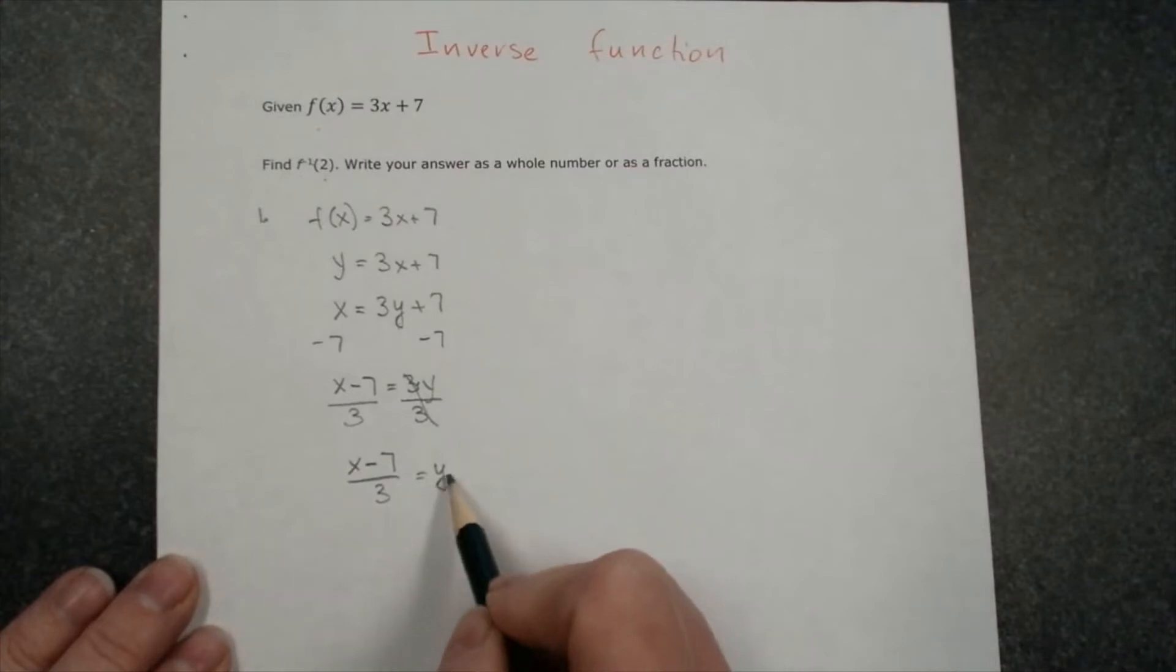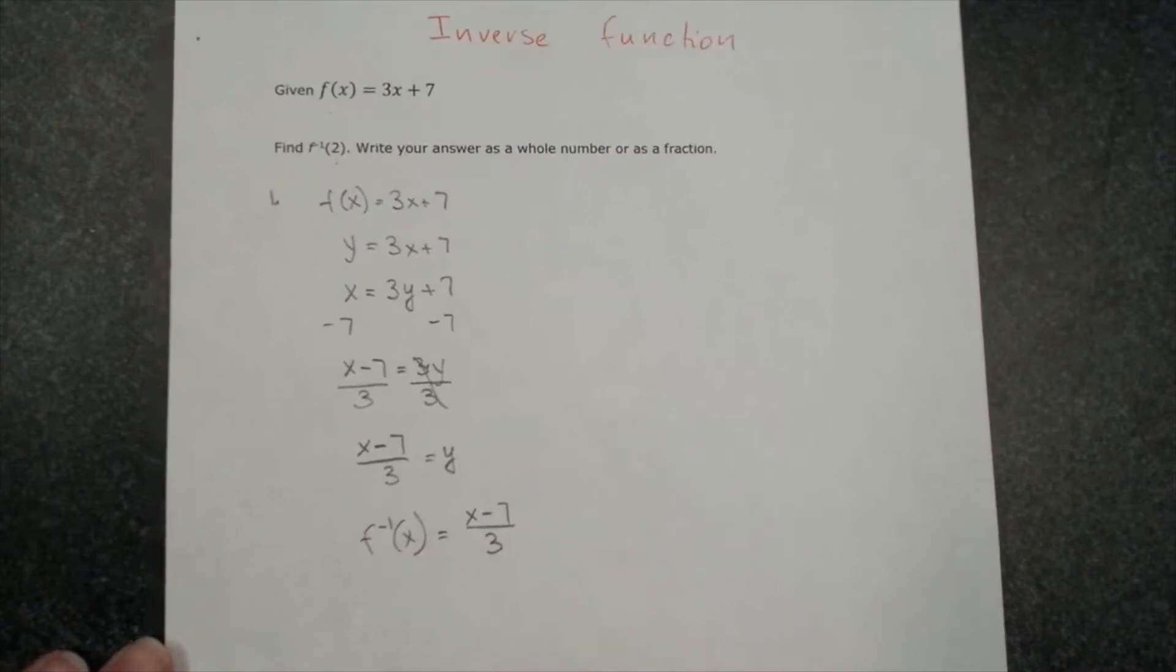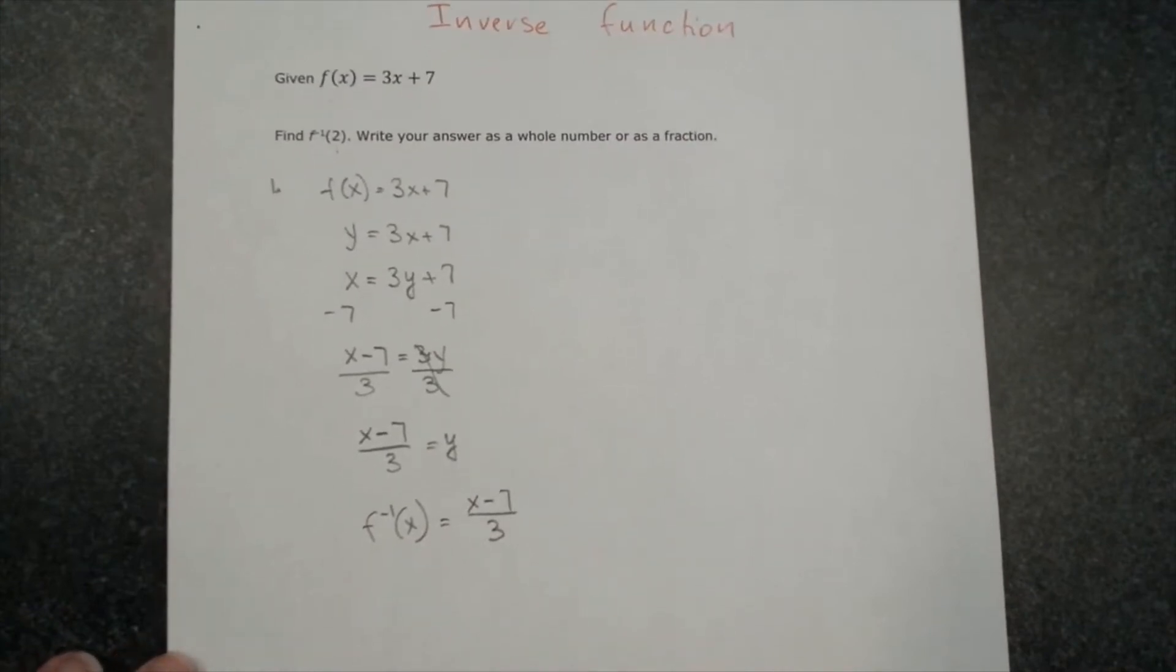And the last step, we will rewrite. So instead of y, we will write f to the negative 1 of x. This means the inverse function of f is equal to x minus 7 over 3. You see that this side stays exactly the same.